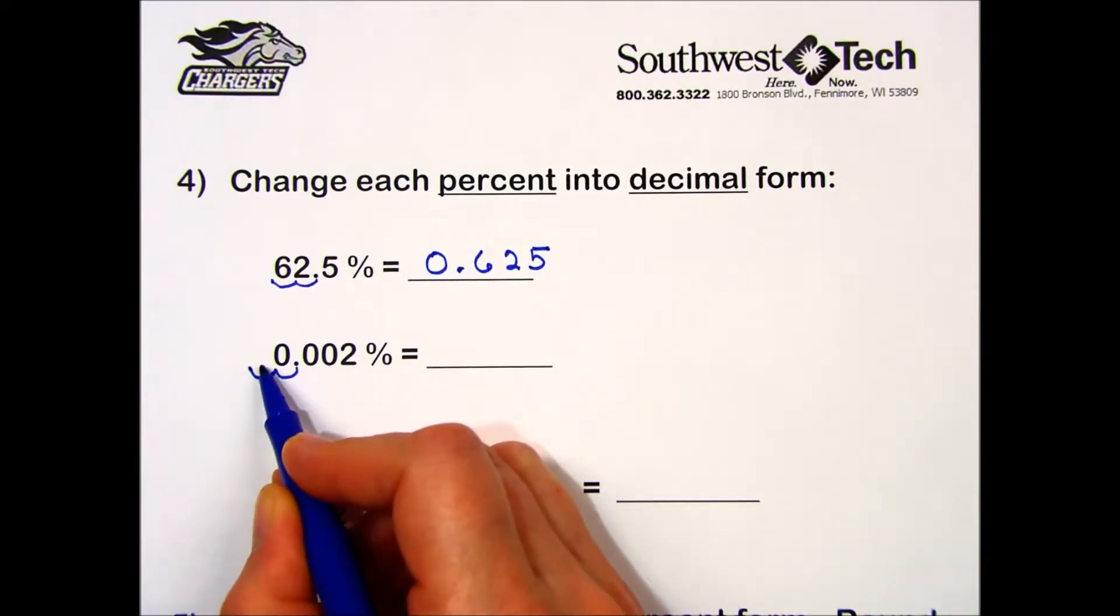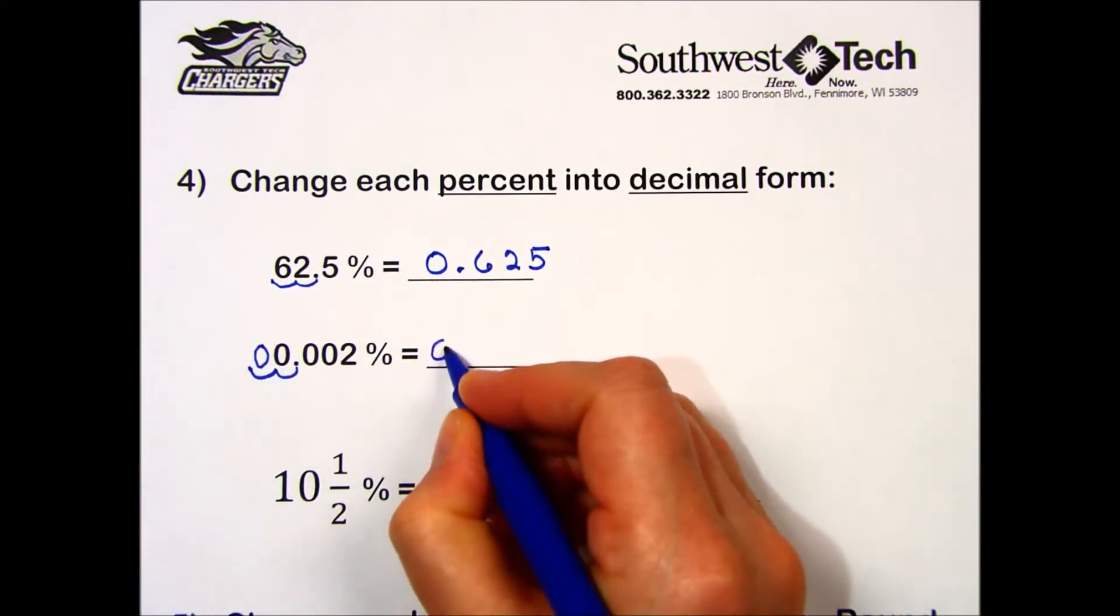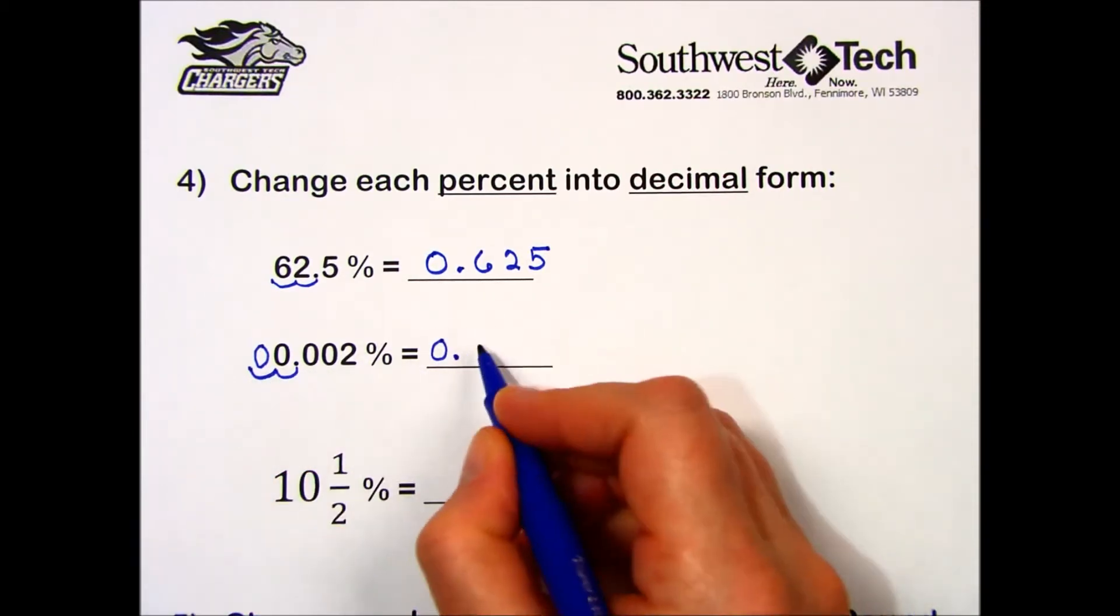Here I have one two places to the left. There's no number here so I write in a zero. My answer becomes 0.00002 with no percent symbol.